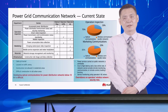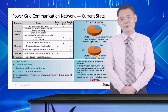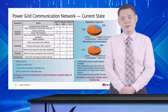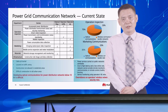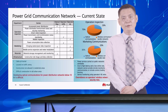Let's talk about the current state of the power grid communication network. An electric power company has multiple departments. For example, the operation and inspection department is mainly responsible for power distribution automation, inspection, and security detection, which have high requirements on network isolation, reliability, and latency. In addition to using operators' GPRS and 4G networks for inspection services, optical fibers are also frequently used.